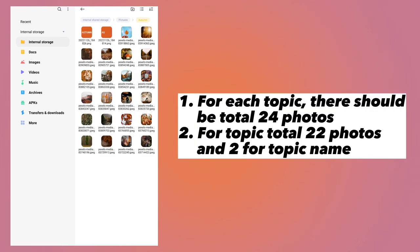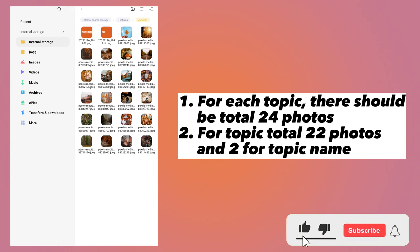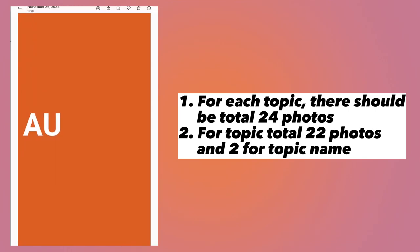Inside each folder there should be a total of 24 photos. 22 of them should be related to that topic — so for example, the topic is autumn in my case, so there are 22 photos about autumn. There should also be two special images: one image should show only half the name of the topic — in my case I am showing only the A and U letters of autumn — and the second image should show the full name of the topic, so here it is autumn.